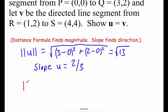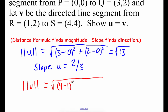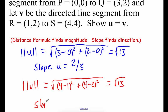Checking vector V: the magnitude is the square root of those x values subtracted and squared plus those y values subtracted and squared, which again simplifies to the square root of 13. The slope of vector V, rise over run between the two points, is also two-thirds. Since both vectors have the same magnitude and the same slope, we can say that vector U is equivalent to vector V.